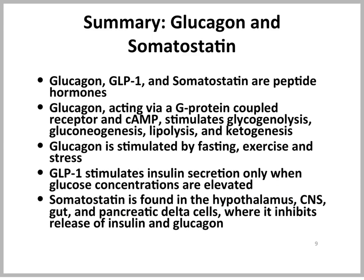In summary, glucagon, glucagon-like peptide-1, and somatostatin are peptide hormones. Glucagon, through cyclic AMP and through its G-protein-coupled receptor and adenylate cyclase activation, stimulates glycogenolysis, gluconeogenesis, lipolysis, and ketogenesis. Glucagon is stimulated by fasting, exercise, and stress primarily.